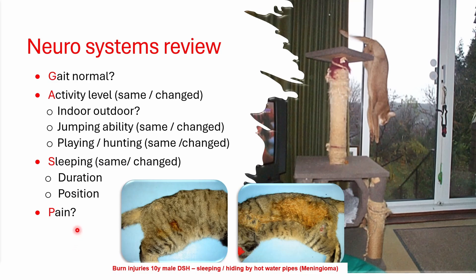People often don't ask about whether the animal's sleeping patterns have changed — owners may volunteer that information, but veterinary professionals are less likely to ask. So, according to the owner, before you've even examined the animal, is the gait normal? It's important to ask quite specific questions for the species. For cats, the first thing that usually goes is their ability to jump up or jump down and to land properly. Is the animal's jumping ability affected? Are they able to do more complex manoeuvres?